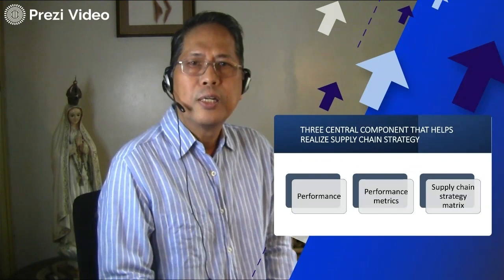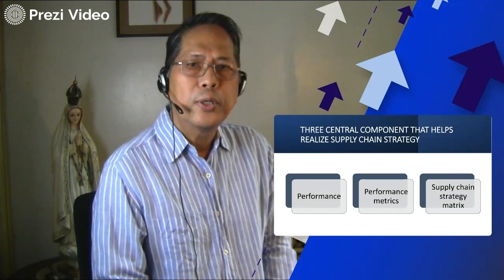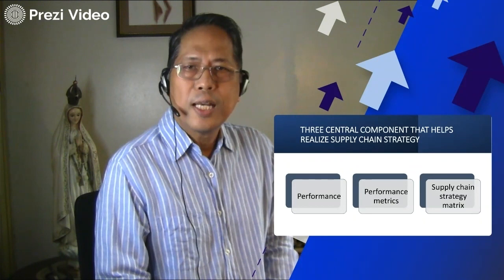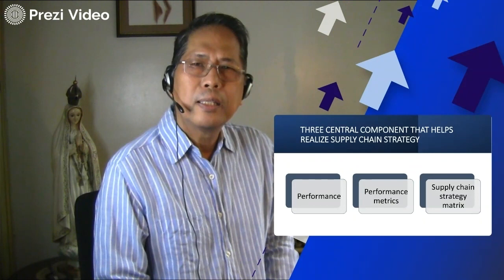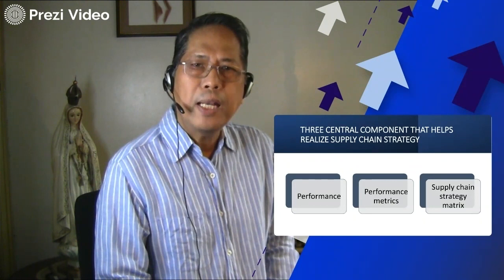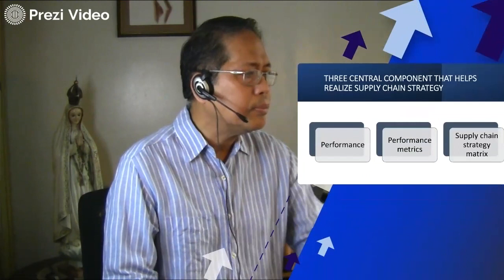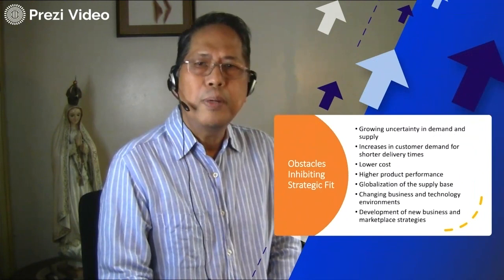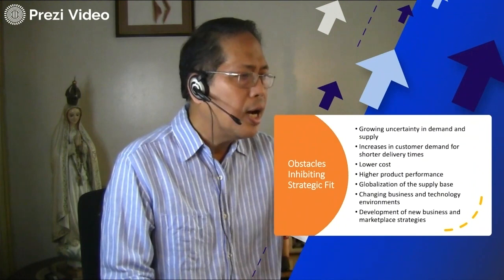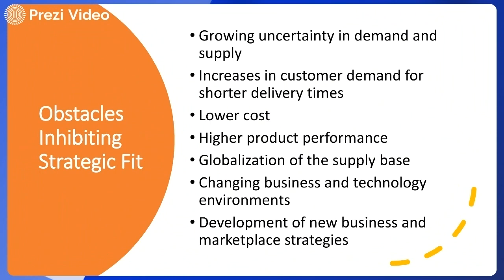The goal of the supply chain strategy matrix process is to enable planners to attain a fit between marketplace strategies identified at the business unit planning level and the capacities and resources available in the supply chain. Obstacles inhibiting strategic fit are the result of growing uncertainty in demand and supply, increases in customer demand for shorter delivery times, lower costs and higher product performance, globalization of the supply base, changing business and technology environments, and the development of new business marketplace strategies.